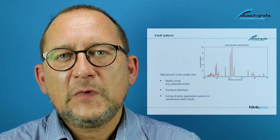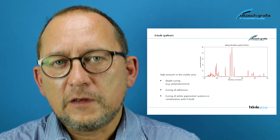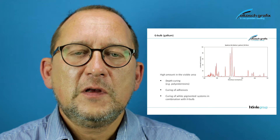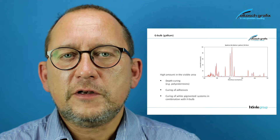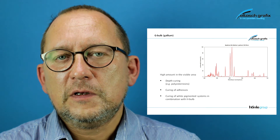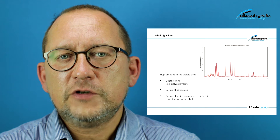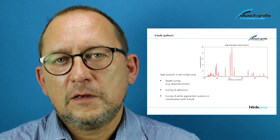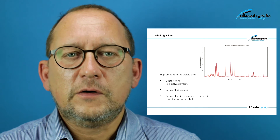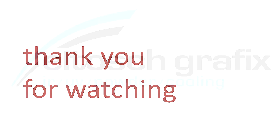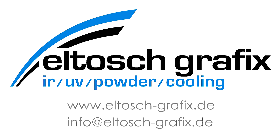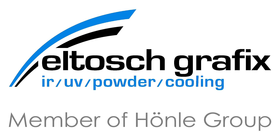Lastly, we have the gallium-doped lamp which has a high amount of radiation in the UV-A range. These bulbs are usually used for curing opaque white or thick layers.